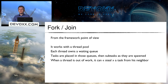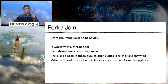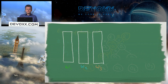From the framework's perspective, Fork/Join is another thread pool. Each thread is associated with a waiting list (an ArrayBlockingQueue). Tasks are put in these queues, and spawned subtasks are also placed there. There's a work-stealing mechanism: when a thread runs out of work, it steals a task from another thread's waiting list.